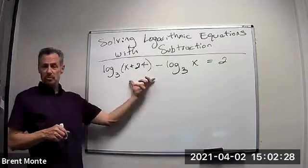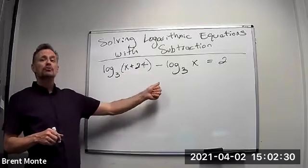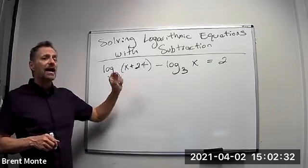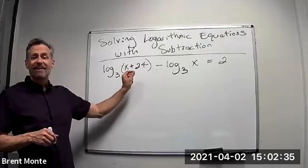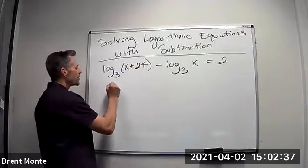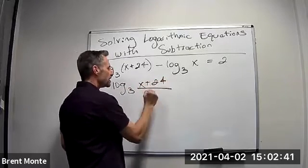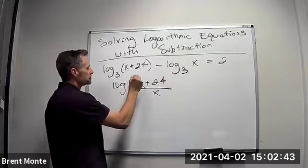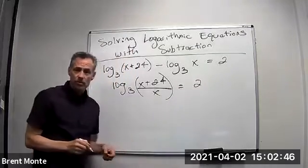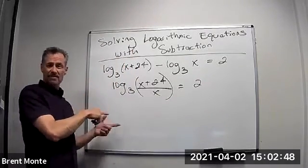I'll use the property that says if I'm subtracting two logs of the same base, I can write it as a single log dividing the arguments. So I can write this as log base 3 of (x+24)/x equals 2.